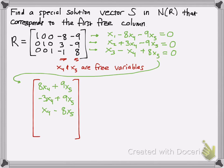Since we have free variables, all you've got to do is put them in the matrix. Free variables are free — meaning they can be any number at all. But x1, x2, and x3 have pivots, so they are restricted to certain types of entries. Now, in order to find the special solution for the first free column, our first free variable is x4.